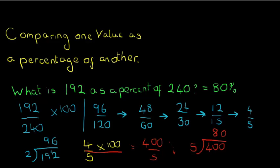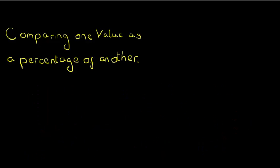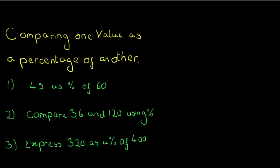Three questions done. The main skill, as I said, is simplifying fractions, but you're not just simplifying — you also have to multiply the fraction by 100. As a final exercise, I want you to have a look at these three questions. I'm going to pause the video to give you a chance to do it. These questions are expressed in different ways but all three are essentially asking the same thing: take the first number and compare it as a percentage of the second number.